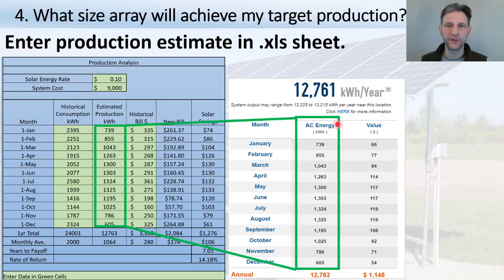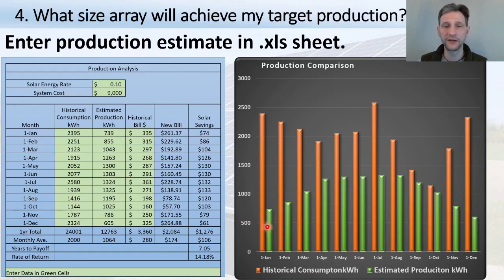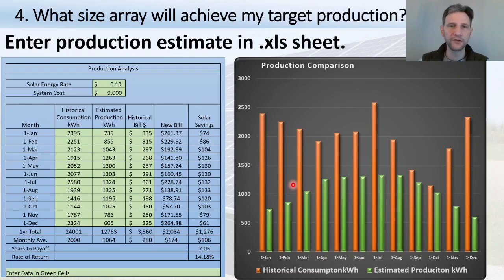Back in the Excel sheet, you can enter the month-by-month expected production from the website into the estimated production column. That gives a total of 12,761 kilowatt-hours for the year. The sheet then generates a chart comparing your historical consumption in orange with production in green. In this scenario, a couple of months come close to net zero but everything else under-produces relative to consumption, so I know I'll always be in the 11-cent-per-kilowatt-hour range.